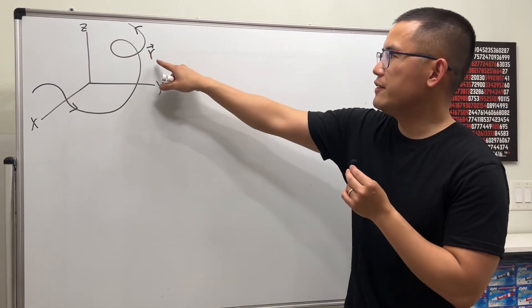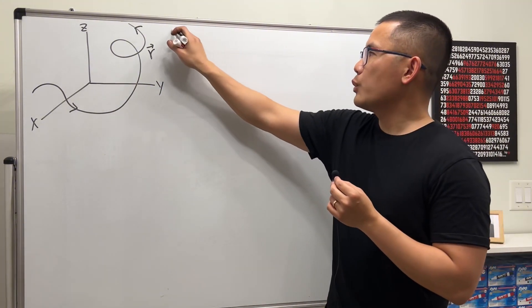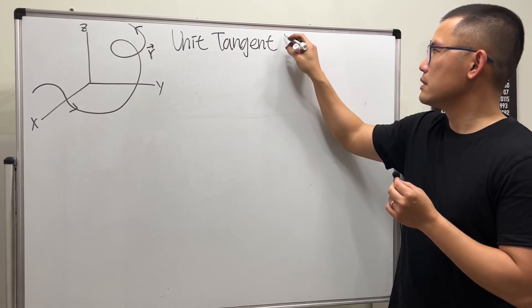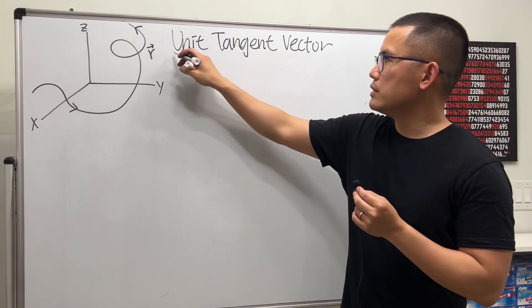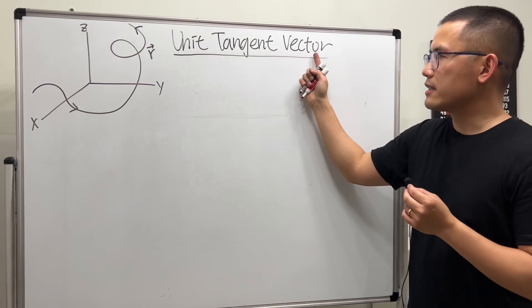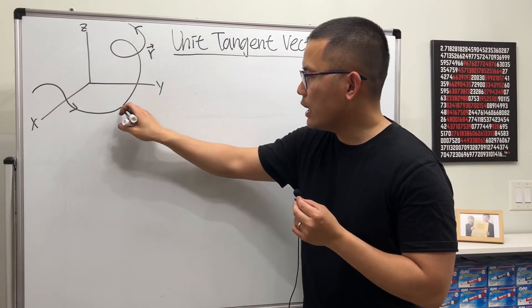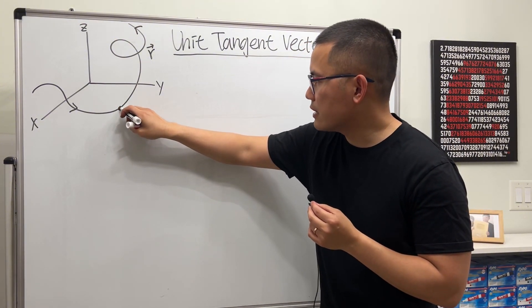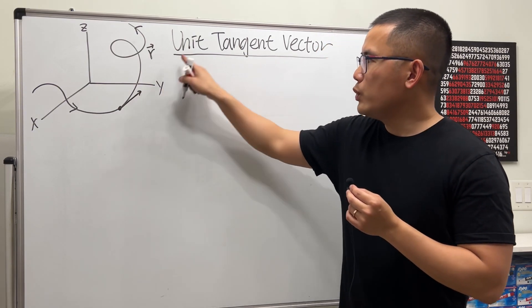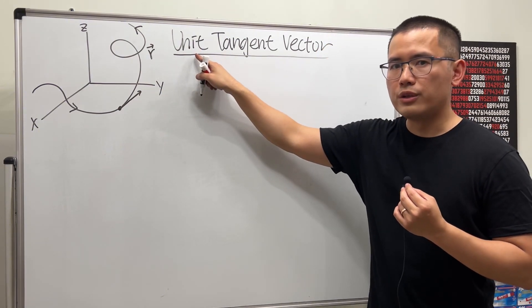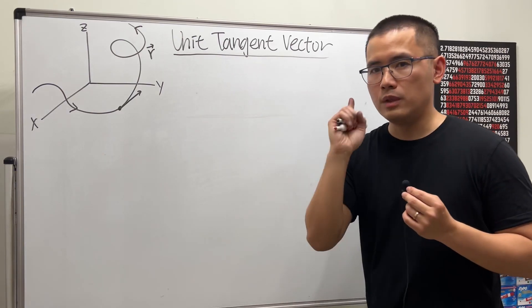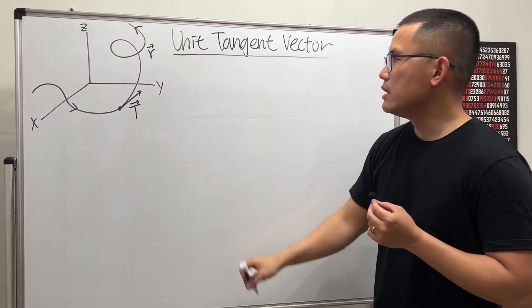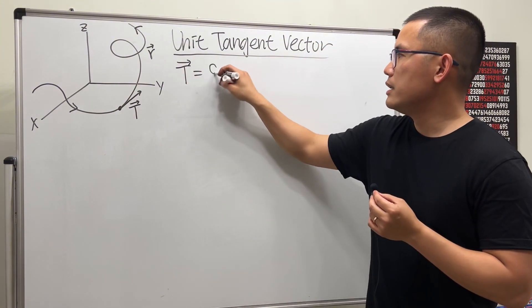Let's say we have a curve in space given by the vector function r. Starting with the unit tangent vector: we want a vector tangent to the curve at a given point, and we want it to be a unit vector — meaning its length must be one. The notation for this is capital T.